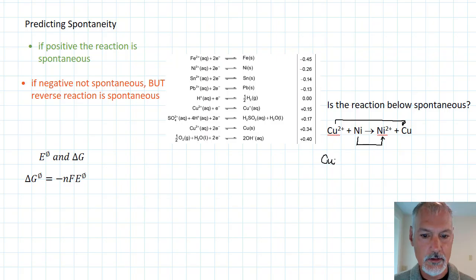So copper 2 plus is going to be gaining two electrons and turning into copper. So that reaction corresponds to the one that we have written right here, exactly the way that it's written. So the energy of this particular half cell is 0.34 volts.